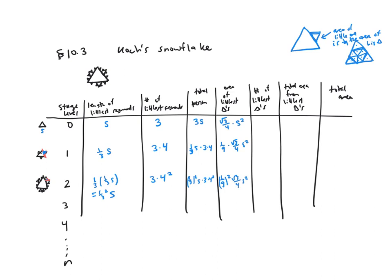To count up the number of littlest triangles: there's just one at stage zero, three at stage one. At the next stage, I'm going to add a little triangle for each segment of my previous stage — each segment is getting a little triangle on top of it. So I just have to count up the number of segments from the previous stage, which was 12, and that gives me the number of triangles I'm adding. So three times four squared will be the number of littlest triangles. The total area from the littlest triangles is the area of the littlest triangle times the number of little triangles.